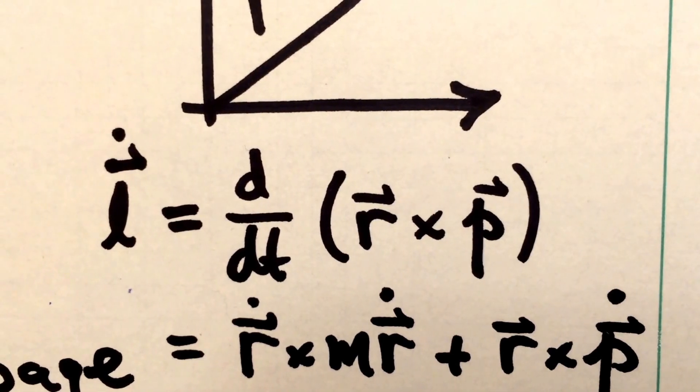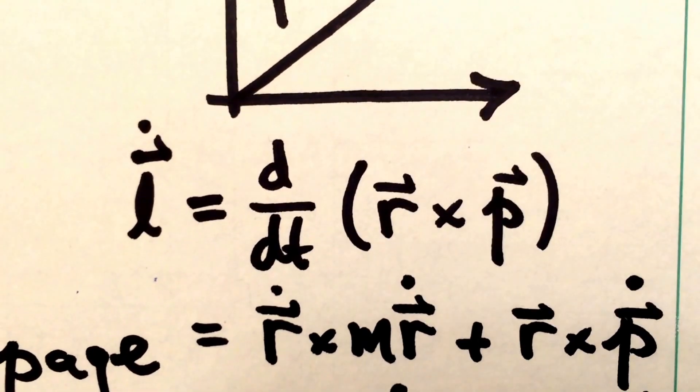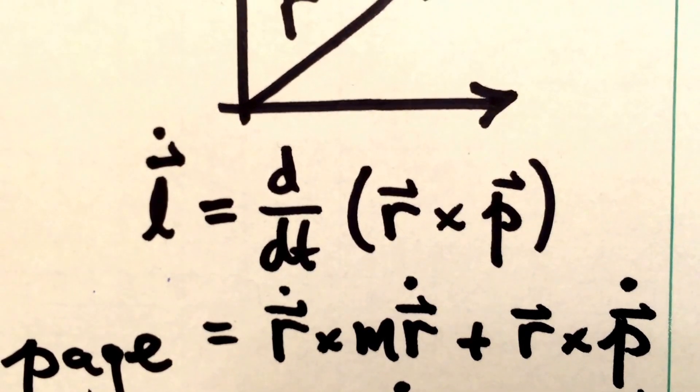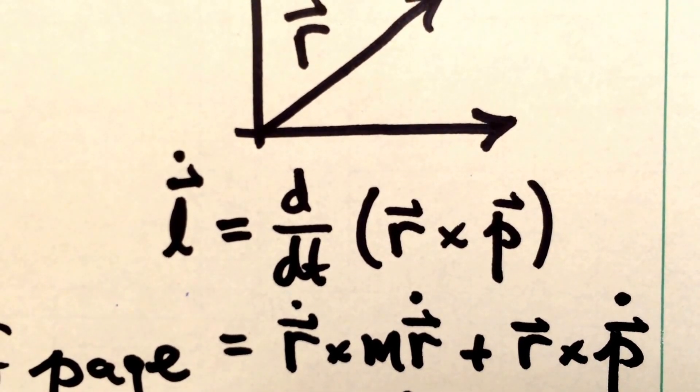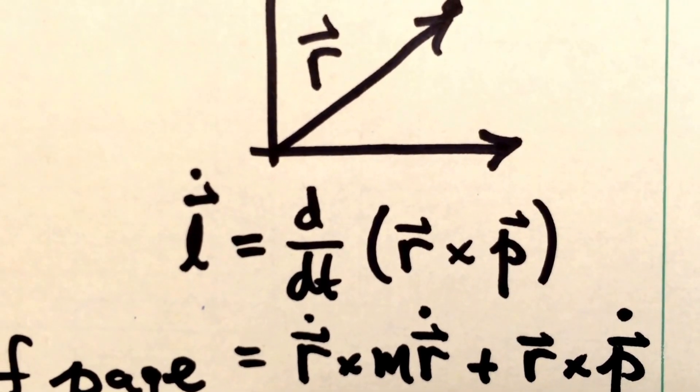So here's the time derivative of the angular momentum vector. And of course, that's equal to the time derivative of r crossed into p. We can take that d by dt into the parentheses, and we're going to apply it using the product rule.